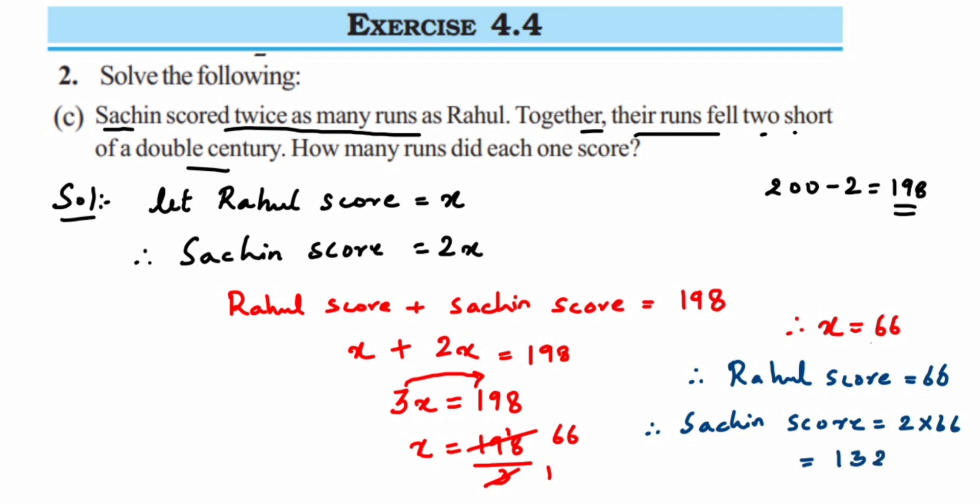That's it. So Rahul has scored 66 runs and Sachin has scored 132 runs. I hope you have understood. If you have any question or doubt, you can drop a comment below, and thank you so much for watching.